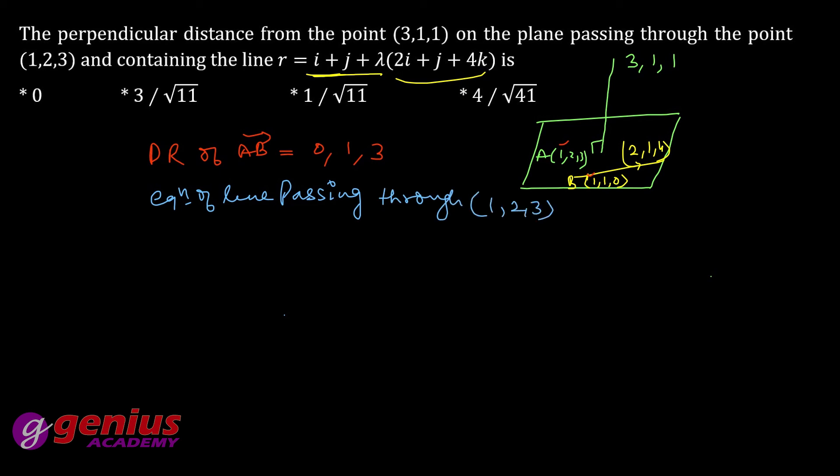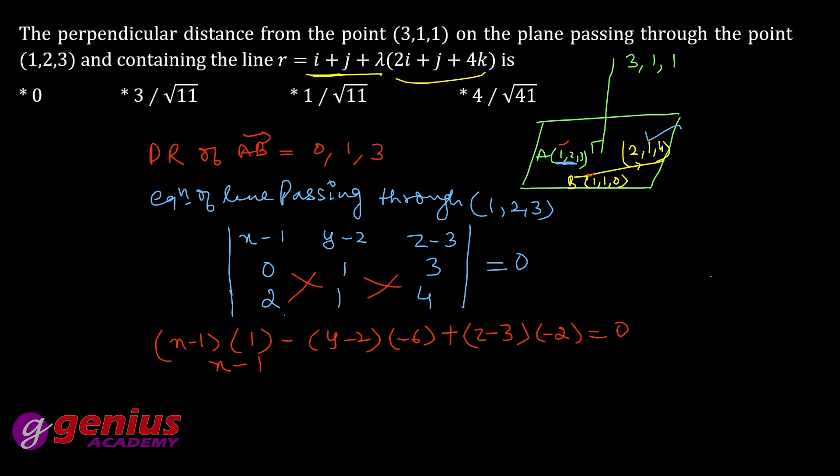Sabse pehle mujhe equation of plane nikal rahi hoon main tabhi formula laga paungi. Equation of line passing through 1,2 and 3. To kya ho jayega yeh, ye ho jayega aapka x minus, formula hota hai, x minus 1, y minus 2, and z minus 3. And niche joh maine direction ratio nikali hai 0,1,3. Point 2,1 and 4 is equal to kitna hota hai yeh zero hota hai. Ab determinant kali jiye. x minus 1, four minus one this minus this four minus three one. y minus 2, zero minus six ho jayega minus six plus z minus 3. Inko bhi kariye zero minus two matlab minus two equal to zero. Final is x minus y minus minus plus six ho gaya yeh to yeh ho jayega plus 6y or plus minus minus twelve. And next is minus 2z or minus minus plus six equal to zero.